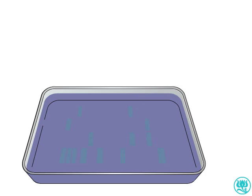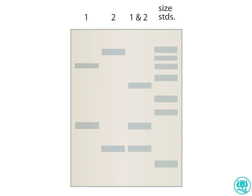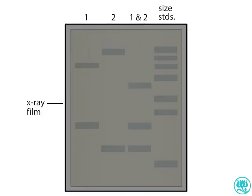The filter is washed to remove any unhybridized probe. A piece of X-ray film is placed over the filter. The radioactive probe exposes the film, revealing the locations of hybridization.